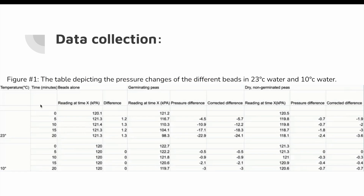For data collection, figure one depicts the pressure changes of the different bead types in 23°C and 10°C water. Notably, for beads alone, the change in pressure was 1.2 and 1.3 kPa — which should theoretically be zero since glass beads cannot respirate. This could be due to human error such as the stopper not being plugged in properly, causing air leakage, or temperature not being kept constant, causing existing air molecules to react. To correct for this, we subtract this existing difference from the other pressure differences to obtain the corrected values.